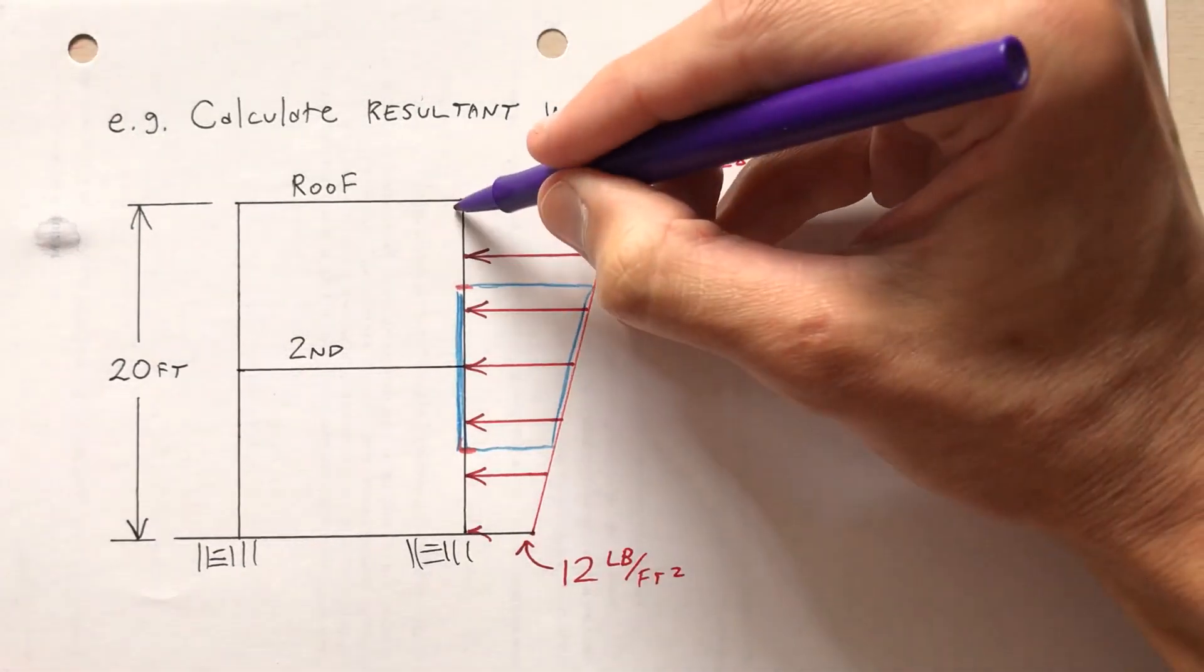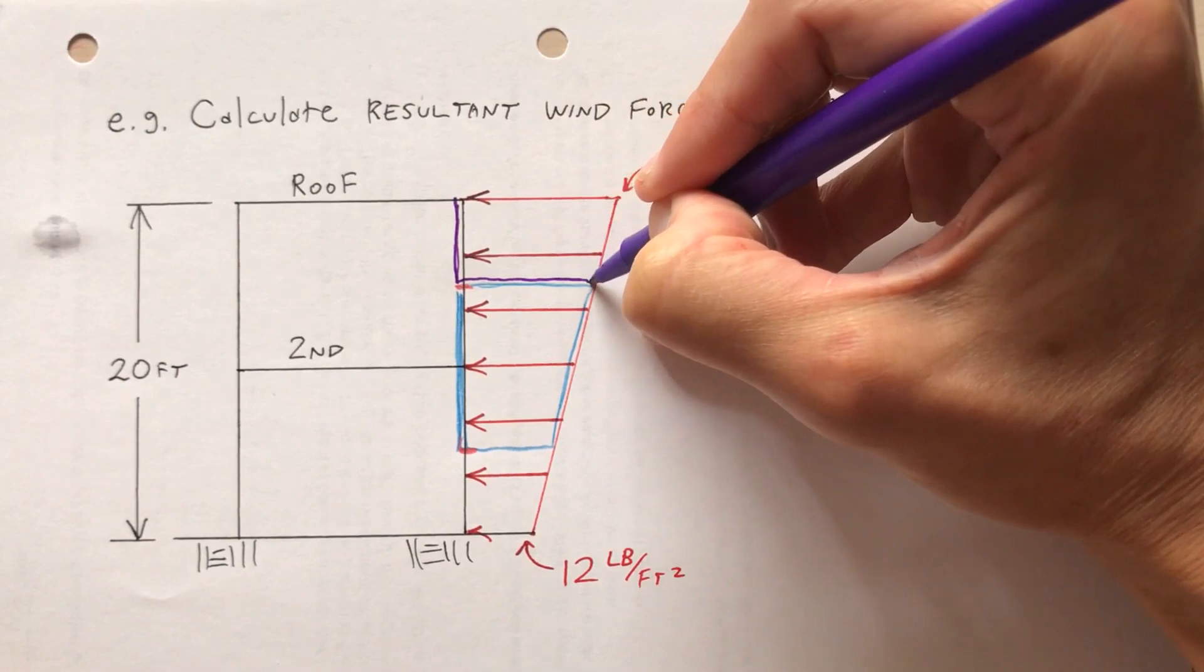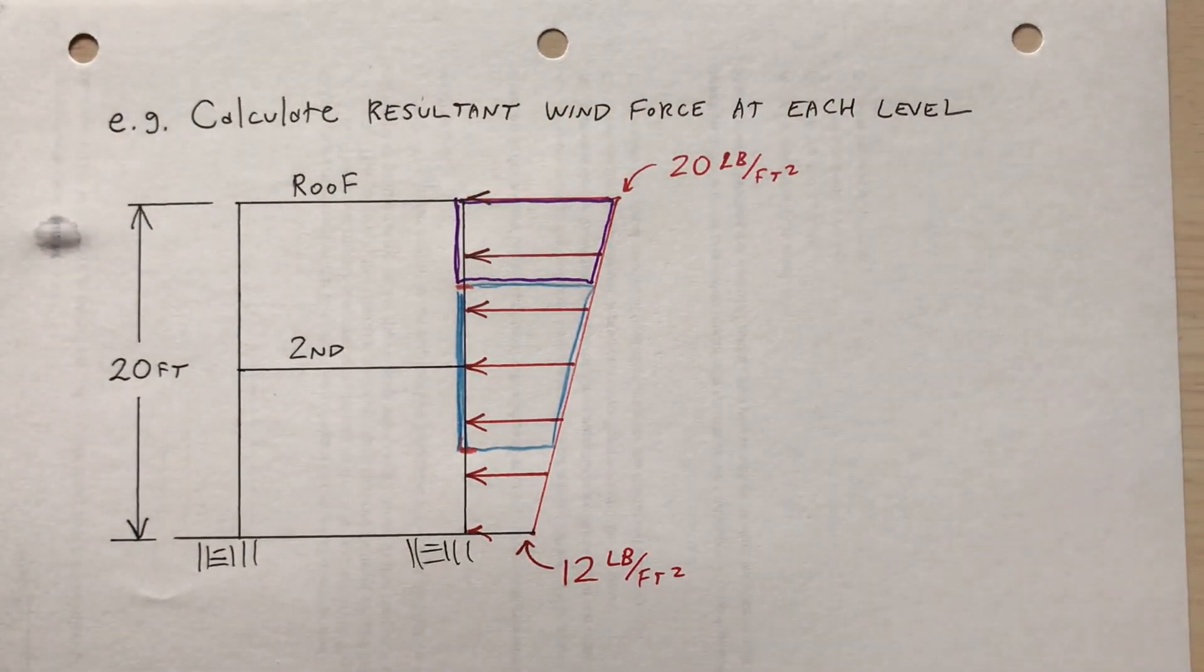for the roof, this portion is tributary to the roof. So this part that I'm outlining in purple, that wind load will be carried by the roof.